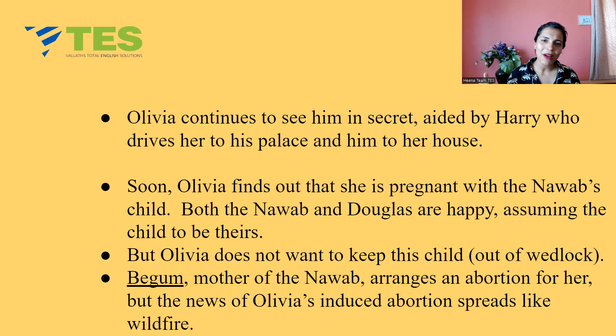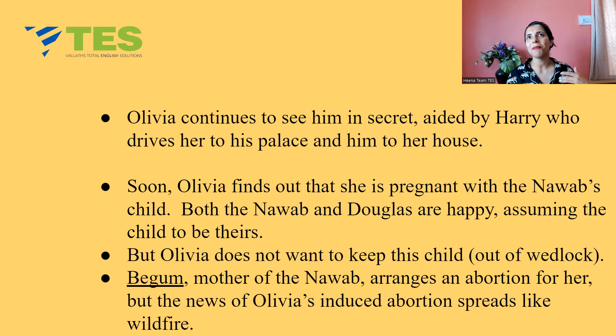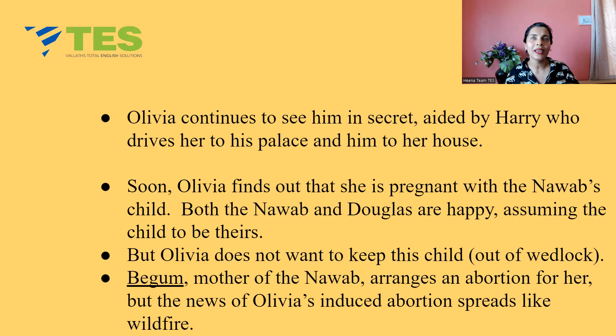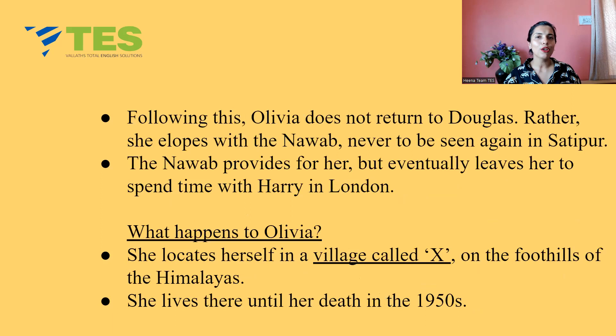Soon Olivia finds out that she is pregnant with the Nawab's child. Both the Nawab and Douglas are happy, each assuming the child is theirs — Douglas having no idea of Olivia's affair. But Olivia does not want to keep the child. Begum, the Nawab's mother, arranges an abortion for her. However, the news of Olivia's induced abortion spreads like wildfire in the small society. Following this, Olivia does not return to her husband Douglas. Rather, she elopes with the Nawab, never to be seen again in Satipur.